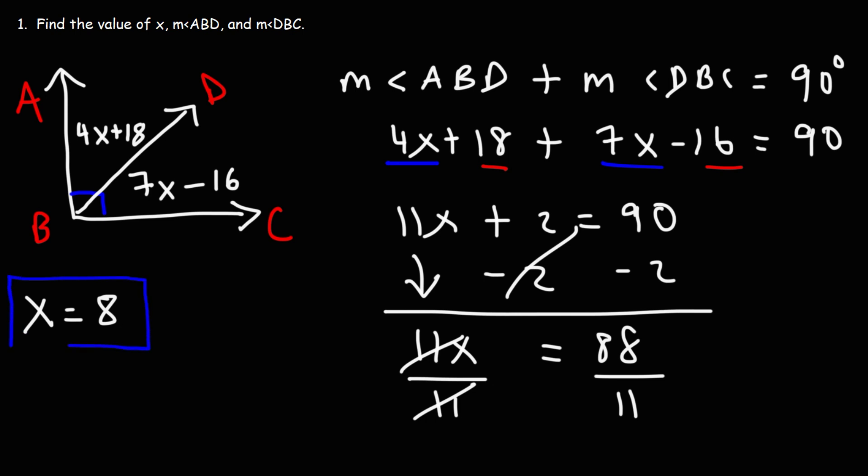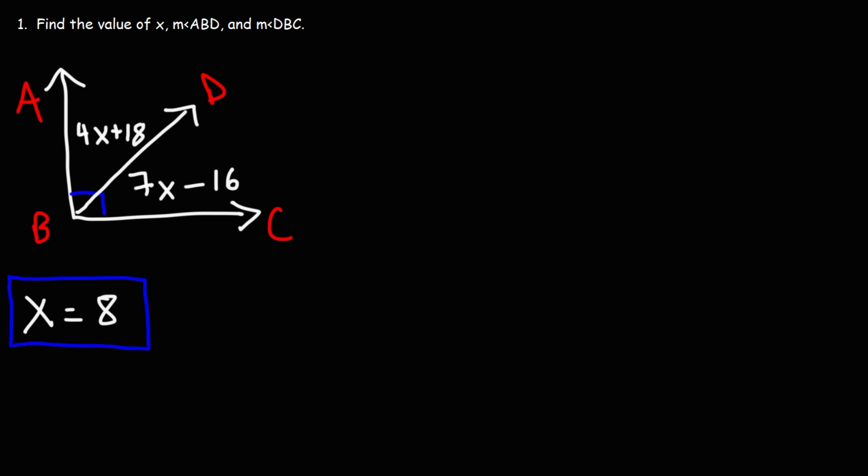So that's the value of X in this problem. Now that we know the value of X, we can find the angle measure of ABD and DBC. So angle ABD, we know that's equal to 4X plus 18. So it's 4 times 8 plus 18.